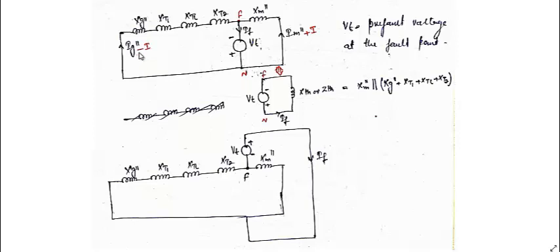What we have done is short-circuited the two voltage sources and connected the reactances the way they appear in the actual circuit. The key difference is that in place of a short circuit we placed a voltage source Vt — the pre-fault voltage at that point — but with reversed polarity: positive connected to neutral and negative connected to fault point F. This is the equivalent Thevenin circuit of the fault circuit.